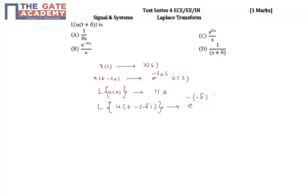...X of s is 1 by s, so this is equal to e to the power delta s divided by s. So the answer is option C.